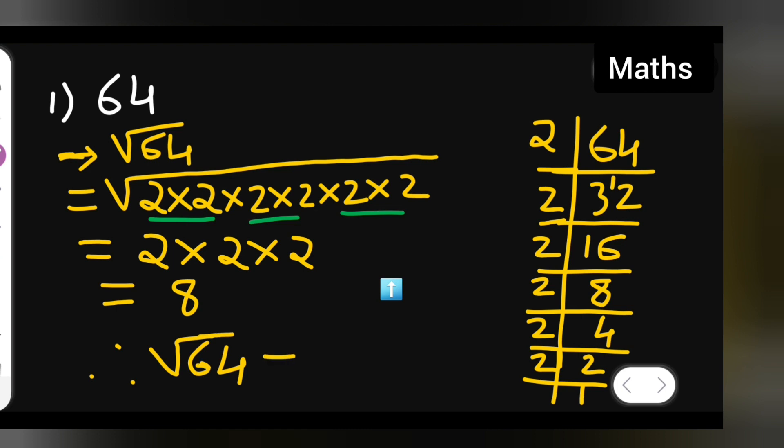Therefore the square root of 64 is equal to 8. So I hope you will have understood how to find the square root of 64 and thanks for watching.